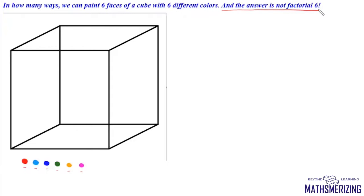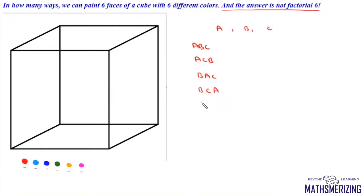To solve this problem we need to understand linear and circular arrangements. We'll start with a simple problem: what are the possible arrangements of three distinct objects a, b, and c? Linearly, these three objects can be arranged as a-b-c, a-c-b, b-a-c, b-c-a, c-a-b, and c-b-a — that is, six ways, which is factorial three.